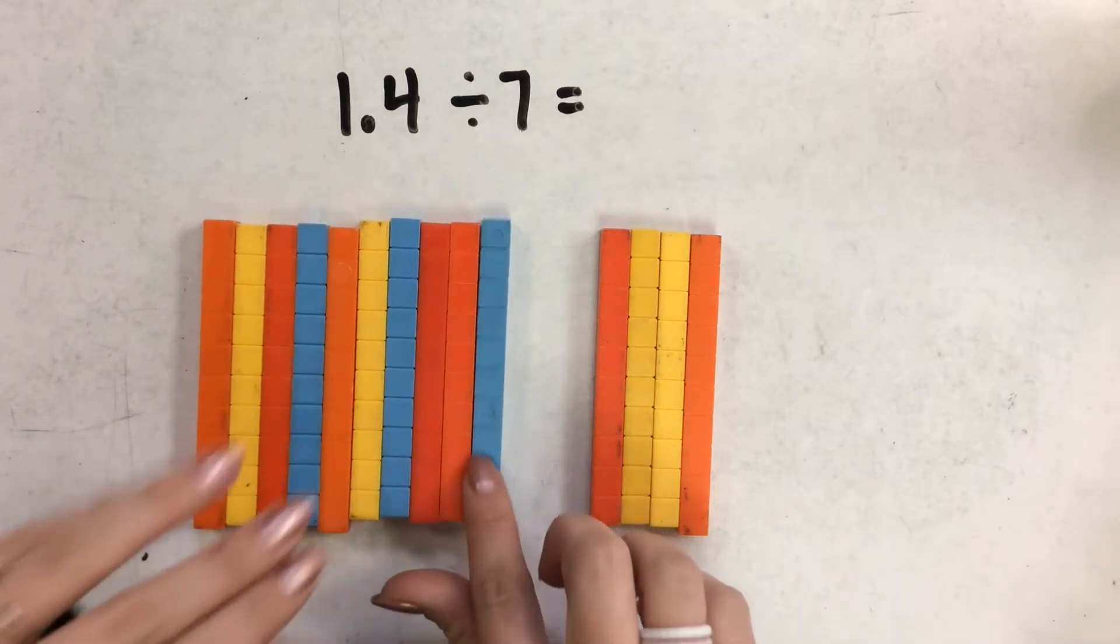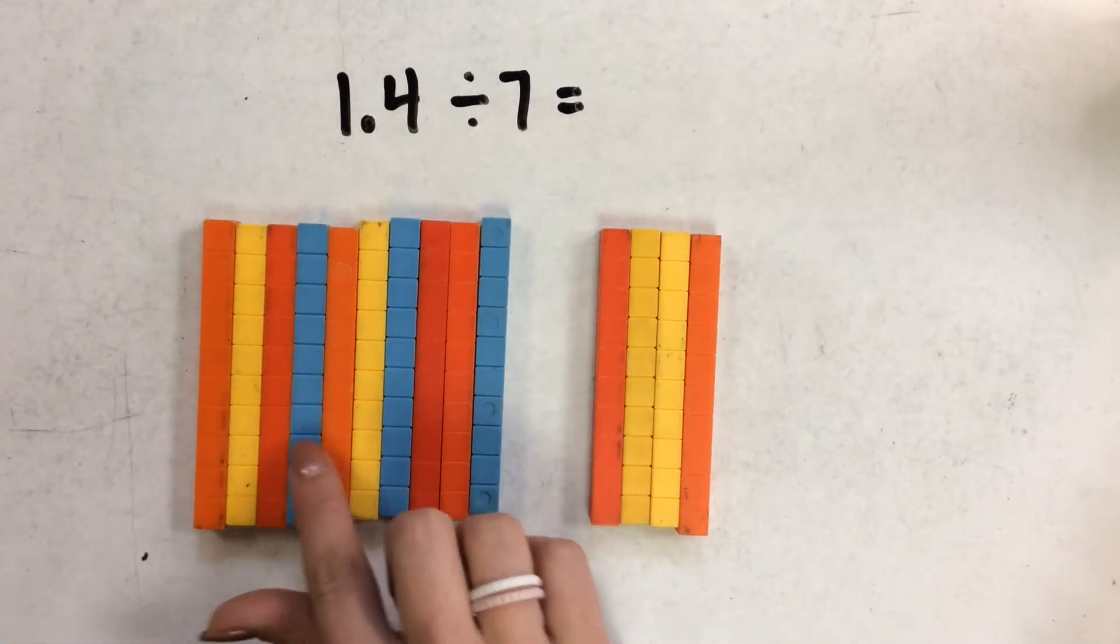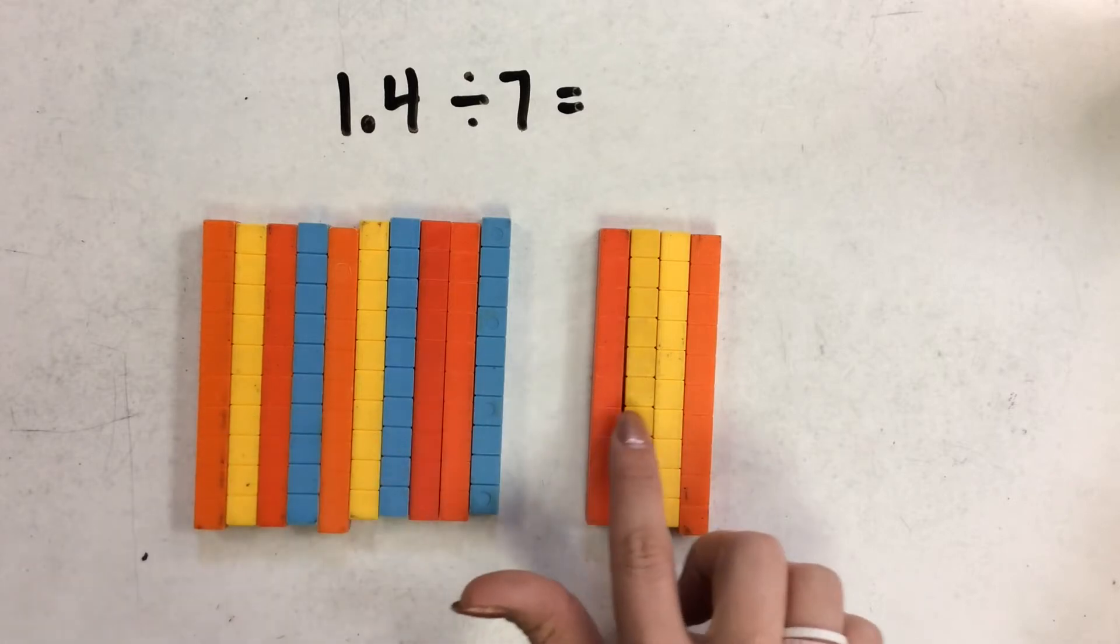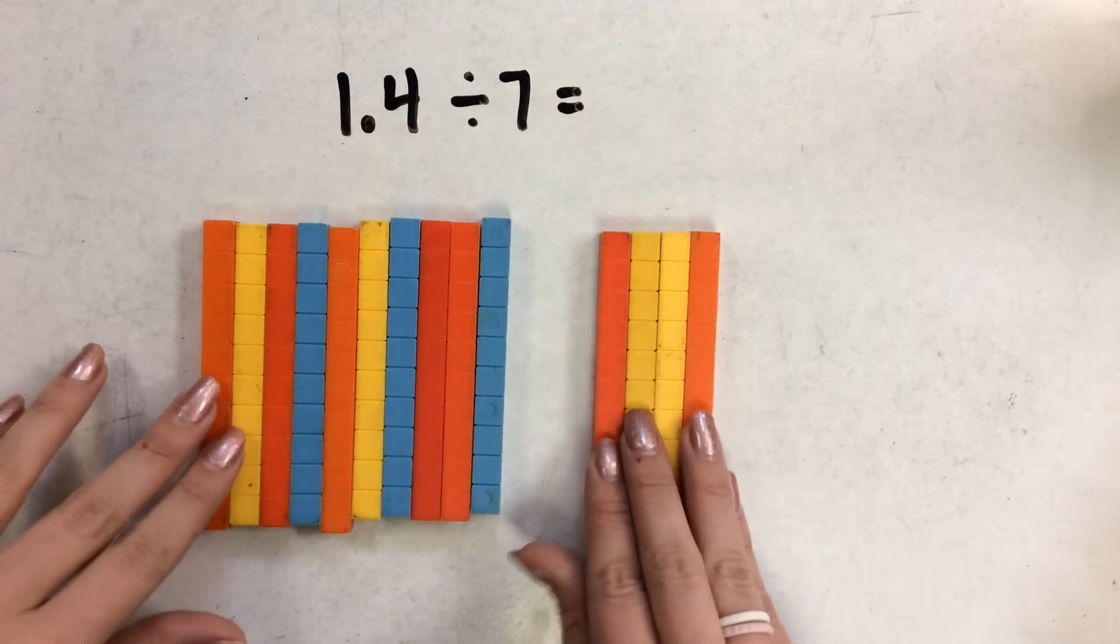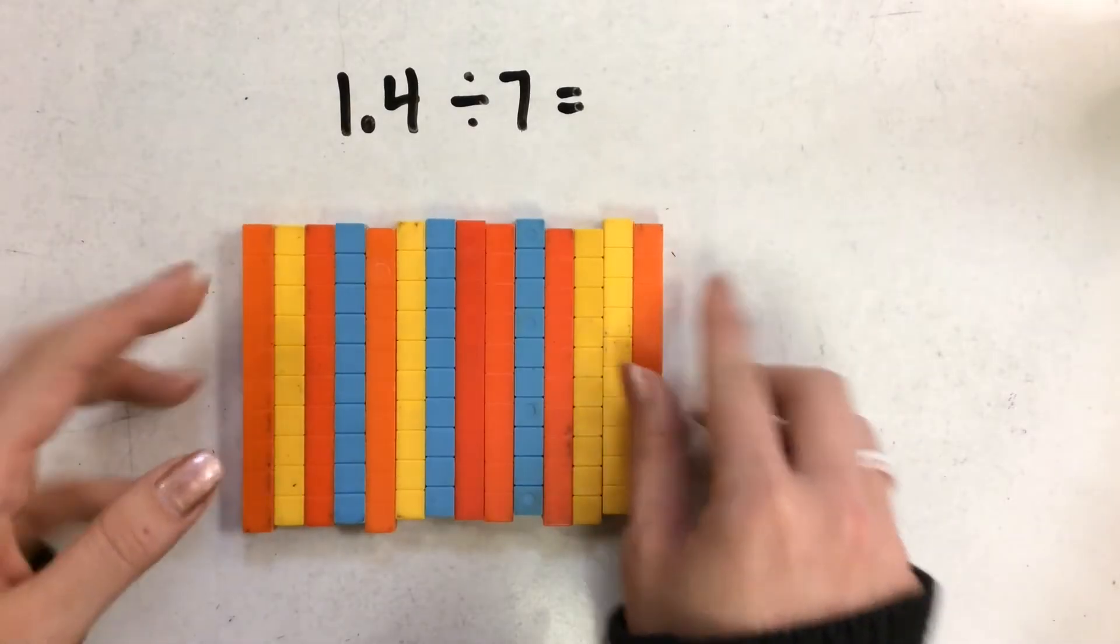So now I have 1, 2, 3, 4, 5, 6, 7, 8, 9, 10, 11, 12, 13, 14 total tenths. And I can just squeeze those together.